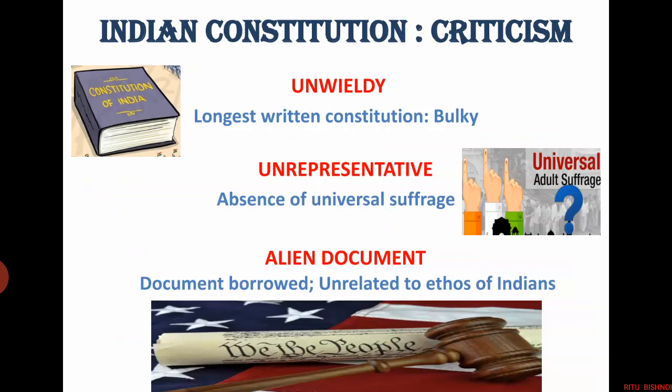The second criticism raised against our constitution is that the body which made it — the constituent assembly — was unrepresentative. At that time, when the constituent assembly was formed, adult franchise was not yet granted, and most members came from the advanced sections of society. However, if we read the debates of the constituent assembly, we find a vast range of issues and opinions. Moreover, freedom fighters who were trusted by the people were part of it. Majority of the members were from Congress, and the first general election of India proved people's faith in it. The process of making the constitution was made as democratic as possible.